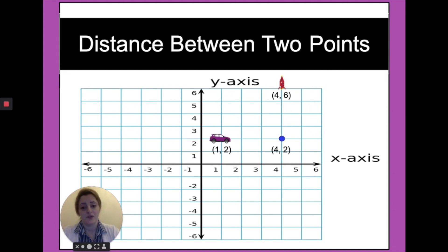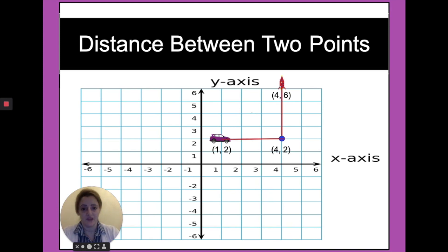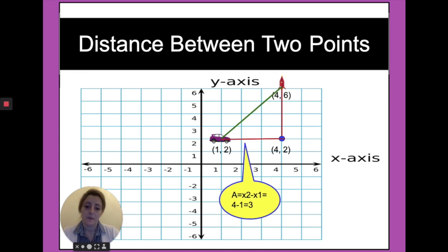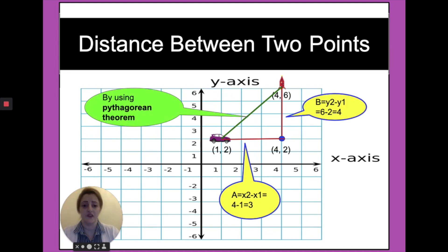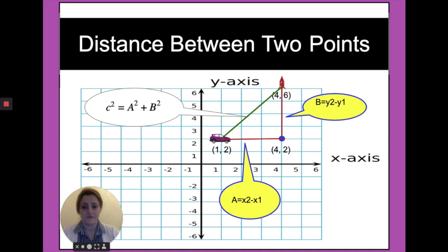So we found the distance a and the distance b, and we have a triangle, and this triangle is a right triangle. So we can use the Pythagorean theorem to find c by using a and b. So c² equals a² plus b².